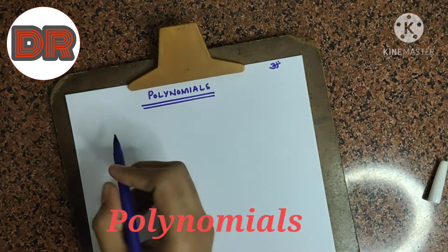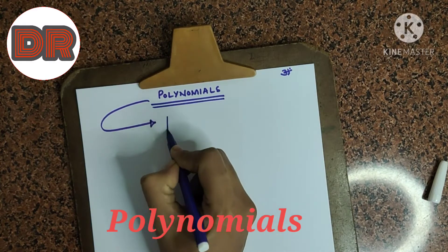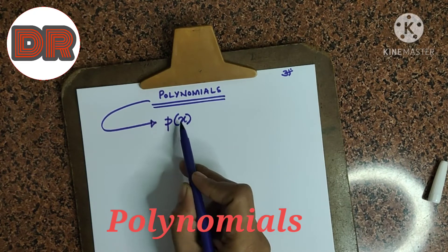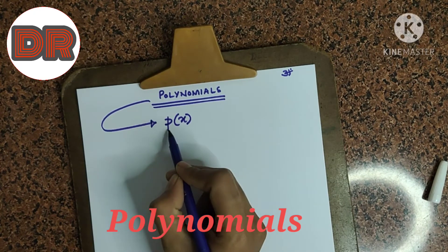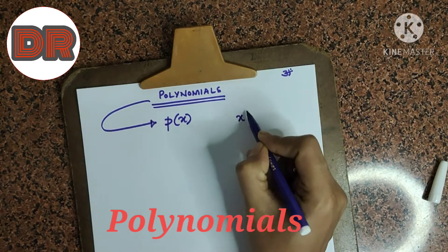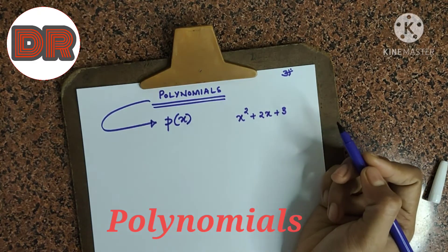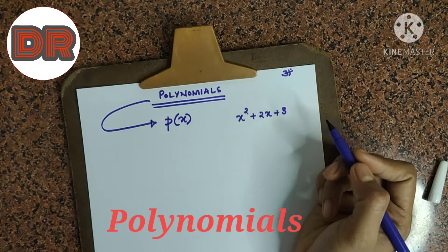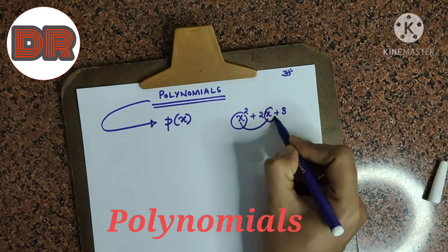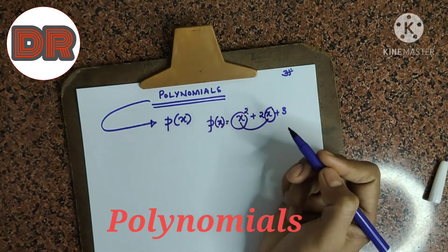So, it is polynomial. Any polynomial can be represented by p of x. What is the meaning of p of x? It is a representation for polynomial with variable x. So, if I write x square plus 2x plus 3, this is a polynomial in variable x, because we have used a variable which is nothing but x. So, I can write p of x is equal to this.